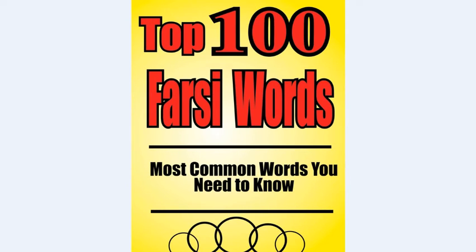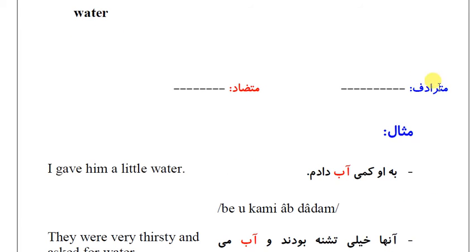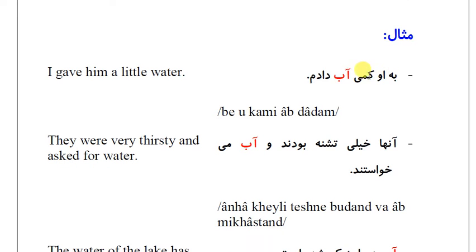In each video I review two words. Today I'm going to review the next word: آب (ab), meaning water. We look at its synonyms (مترادف) and antonyms (متضاد). Example sentence: به او کمی آب دادم — I gave him a little water.